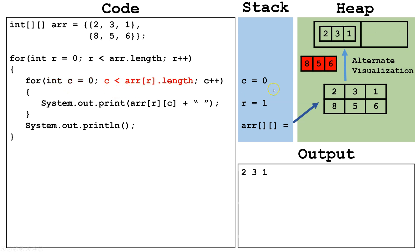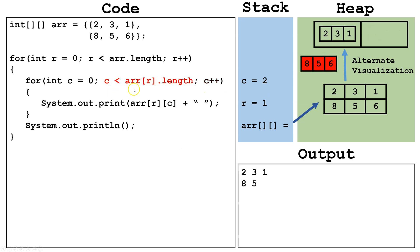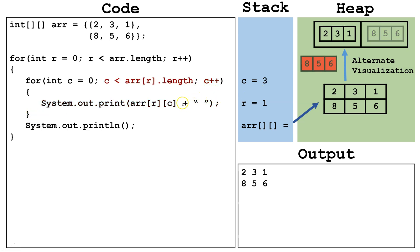We print row one column zero, which is eight. We get to the end of the inner loop, increment c to one, check is one less than three — it is — so we print row one column one, which is five. We increment c to two, check is two less than three — it is — so we print row one column two, which is six. We increment c to three, check is three less than three — it is not — so we terminate this inner loop.